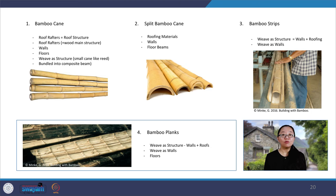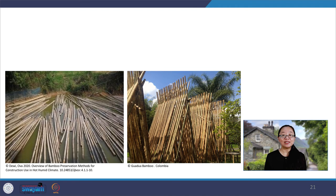Before we continue to look at how bamboo is used today, we need to highlight the drawbacks of using bamboo as a building material and the treatment to reduce the impact of those drawbacks. Bamboo is vulnerable to exposure to ultraviolet rays and rain, requiring protection during handling, execution, and maintenance. Furthermore, bamboo contains a large quantity of starch which attracts insects, and the presence of humidity can cause the appearance of fungus and lichen.